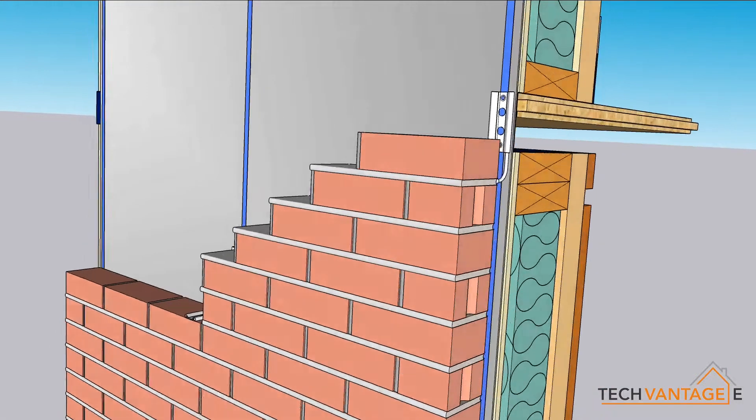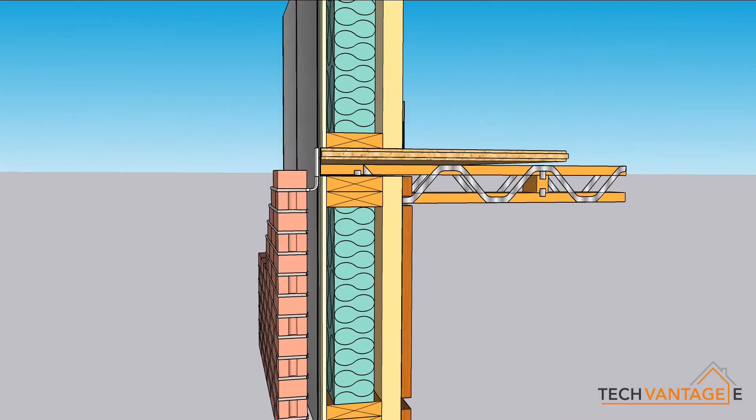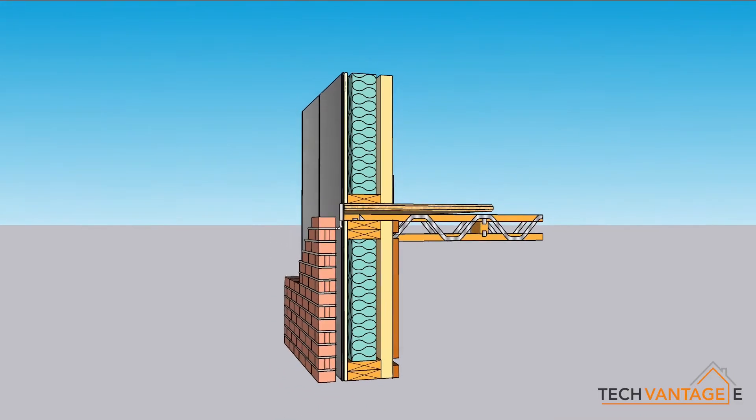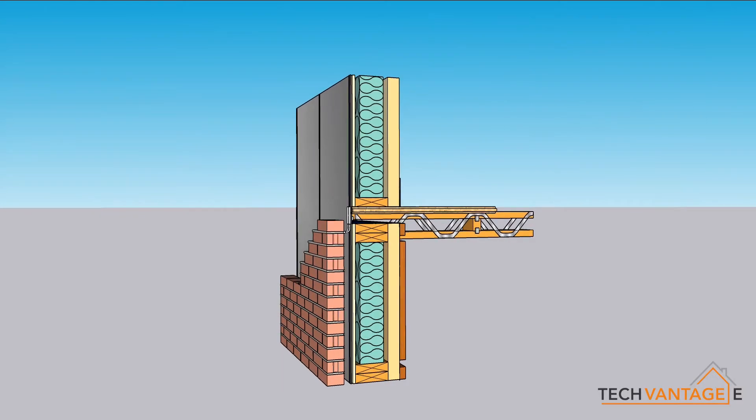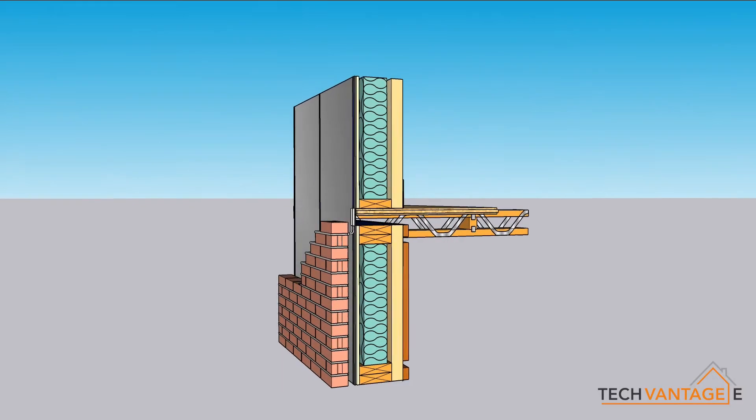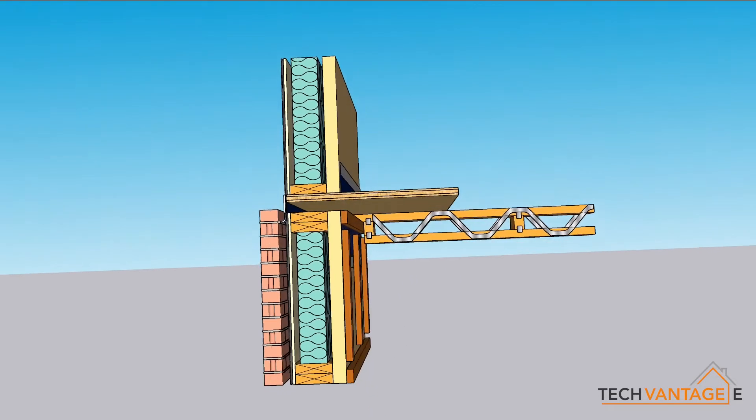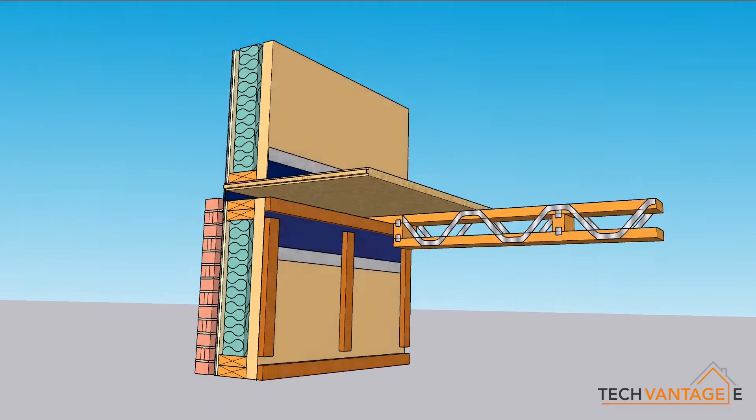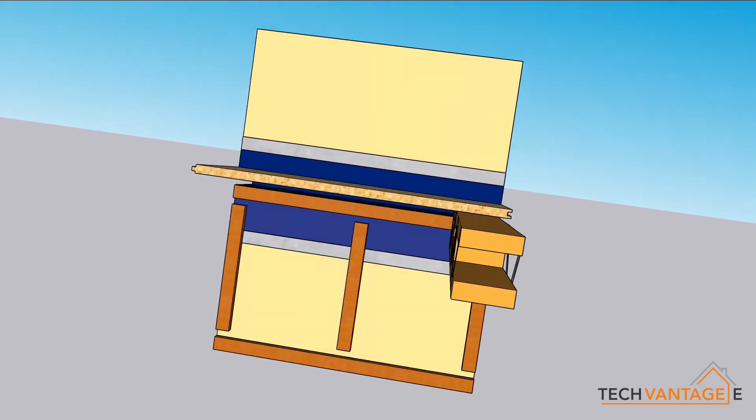TechVantage E is our super insulated panel system. It consists of a 140mm panel containing 100mm of rigid urethane insulation centrally fitted in the panel. The panel has a 9mm OSB outer sheathing with a choice of breathable flexible membranes. Internally it has rigid polyurethane insulation, the thickness of which can vary from 20mm to 120mm depending on the U-values required.